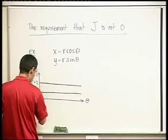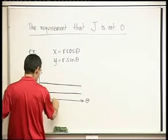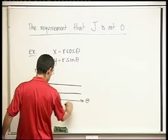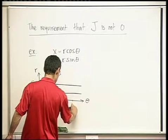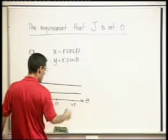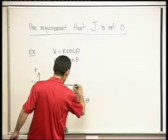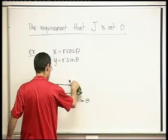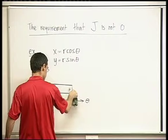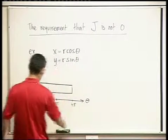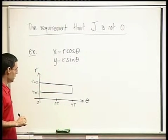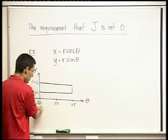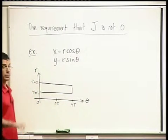This is 0, and suppose this is 2 pi, and maybe this is 4 pi, and suppose we only look at this portion of it. So this is a nice rectangle in r-theta, where r is bounded between 1 and 2, and theta is bounded between 0 and 4 pi.